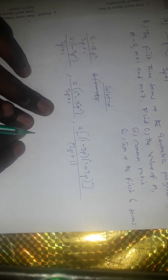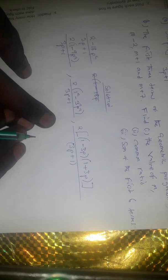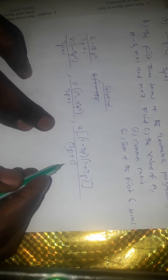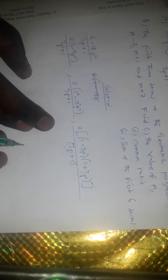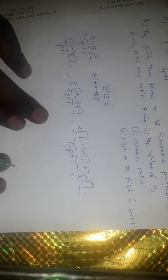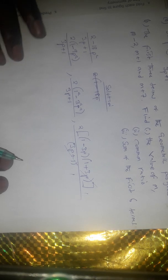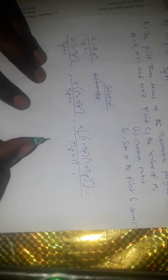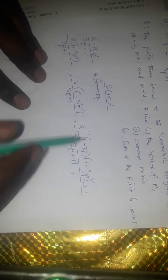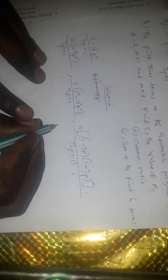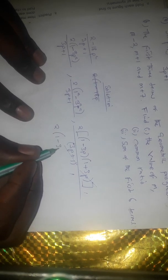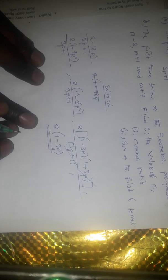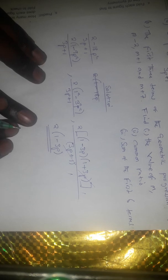We can now see that we have something similar when we consider the numerator as well as the denominator. The (1 plus 3p) in the numerator is going to cancel with the (3p plus 1) in the denominator, giving us 1. This can now be simplified further where we take away the brackets and we remain with 2(1 minus 3p) divided by 1, which is still the same. So that will be our solution for the first part.